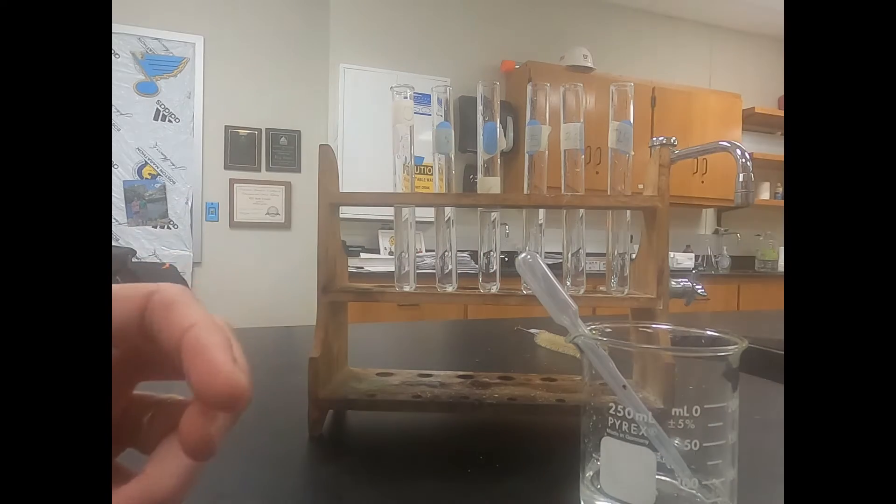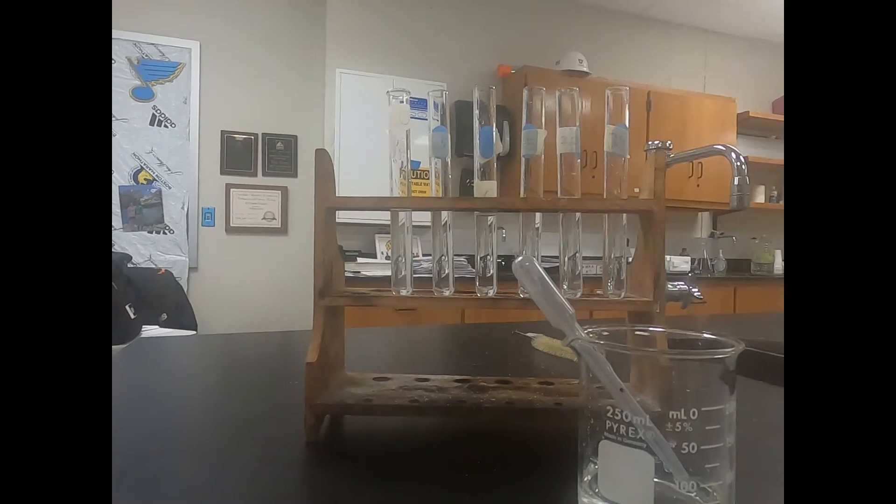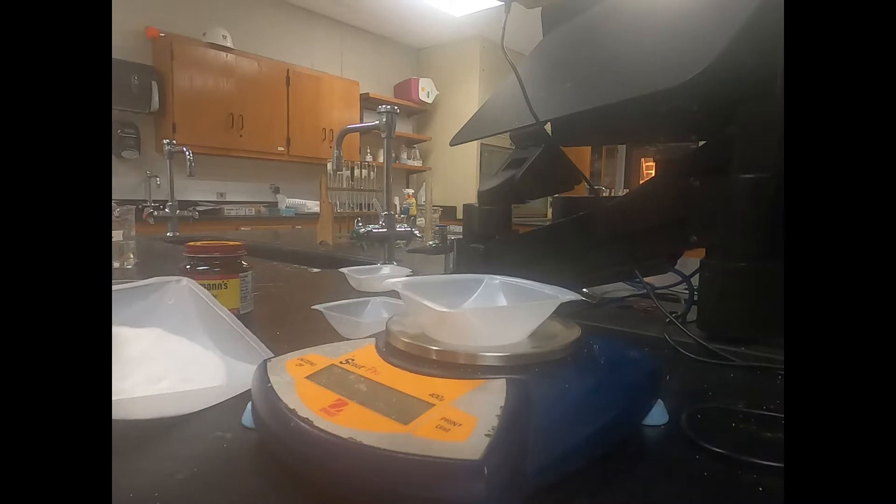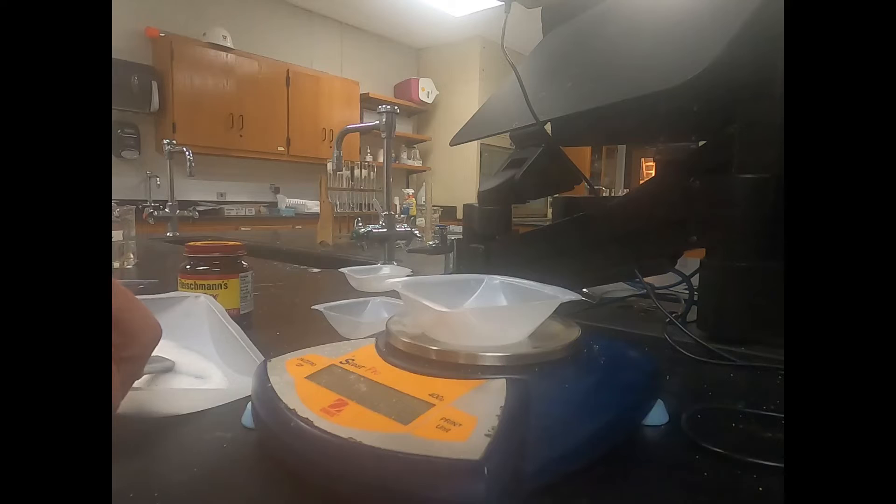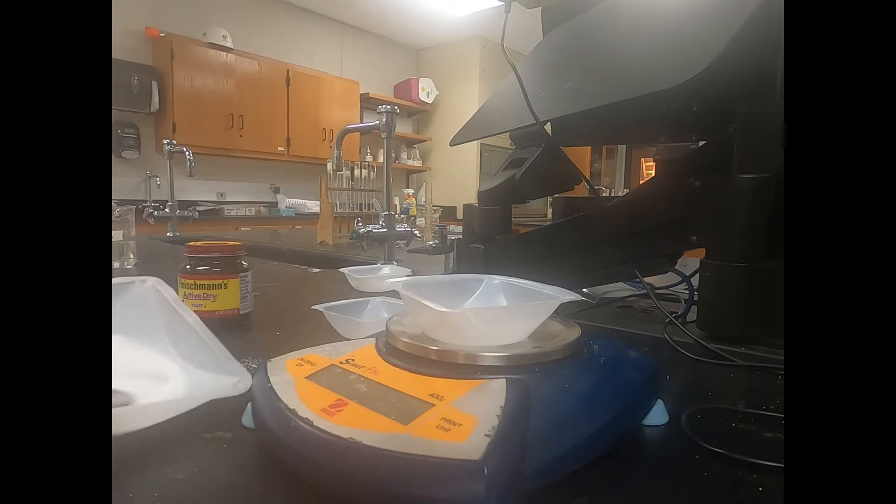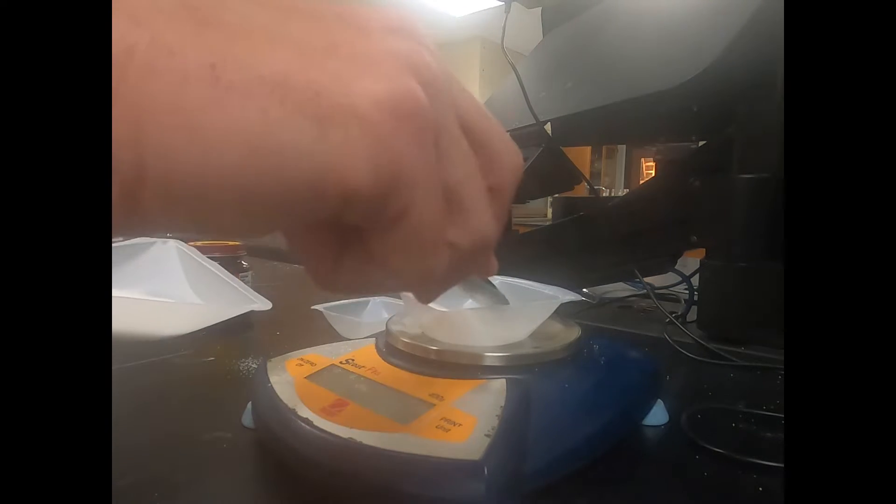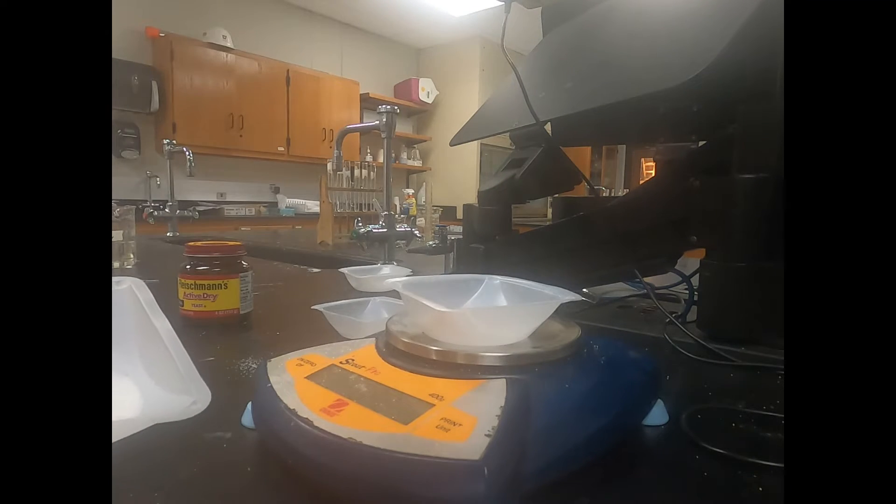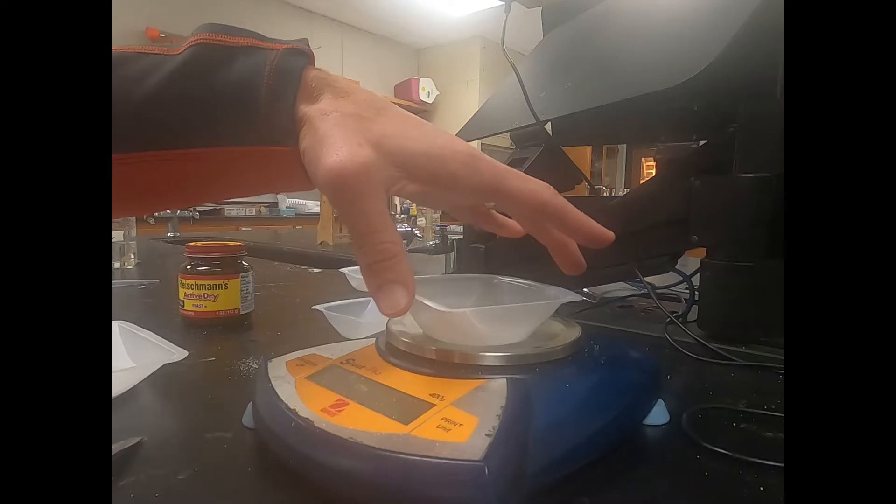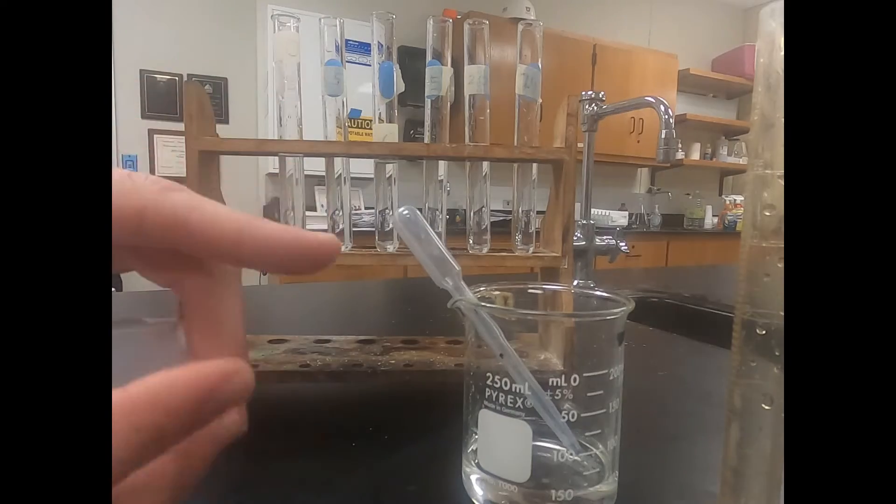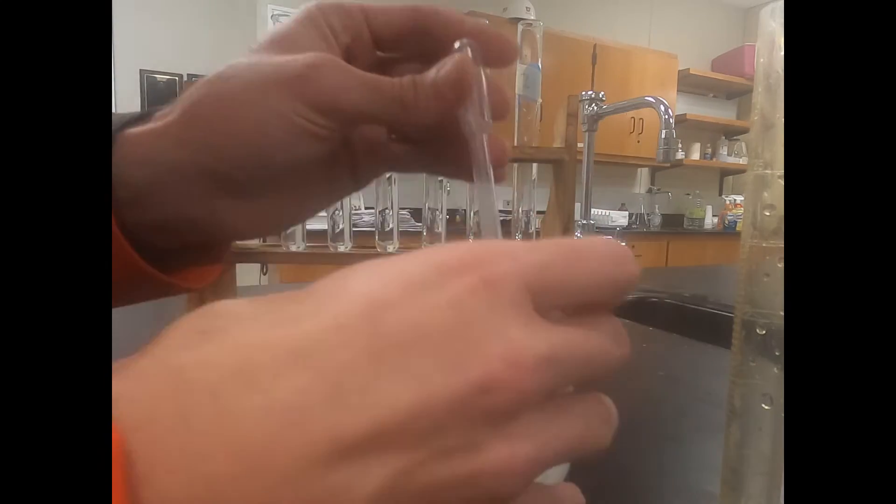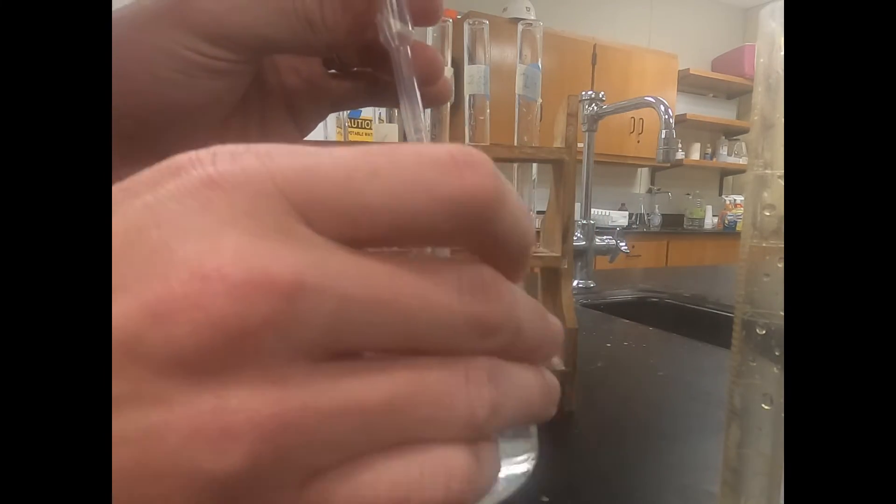Once we have our 50 milliliters of water next we're going to get one gram of sugar. At the scale we'll put our weigh boat on, zero the scale, and scoop out until we have one gram of sugar. It doesn't have to be perfect, but we want to be pretty close to 1.0 gram. 1.04 is going to be good enough for this lab. We pour it in with our water and swirl it around and mix it into our solution.